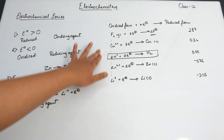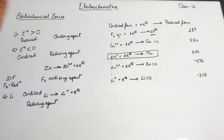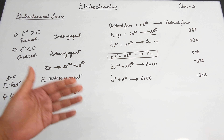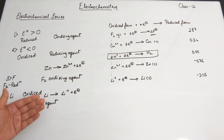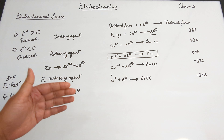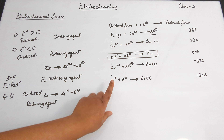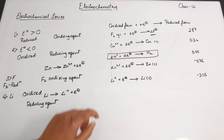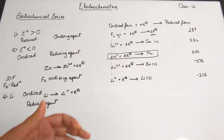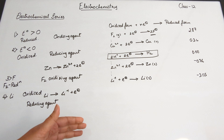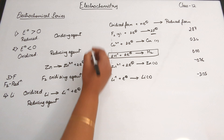It forms F⁻ and essentially the reduced form is more stable than the oxidized form, which means that F₂ becomes a very good oxidizing agent because it itself can undergo reduction.